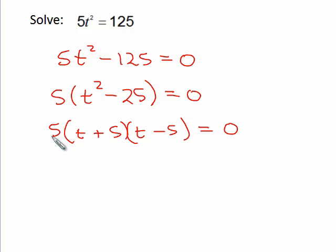Now notice that even though I have three factors, I should only have two answers, because when I set the first factor equal to zero, we can see that there's no variable, and 5 is not equal to zero. Therefore, there's no solution in that first factor.